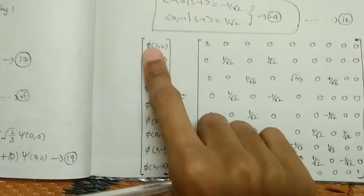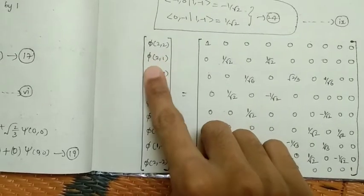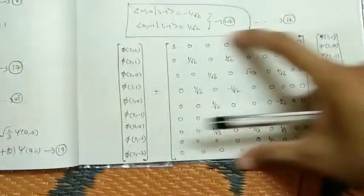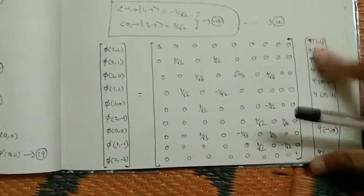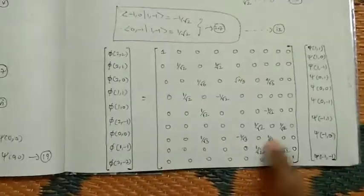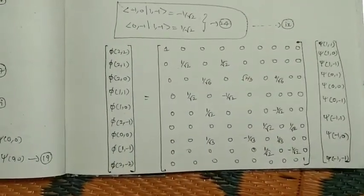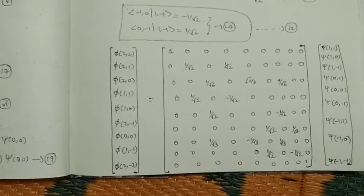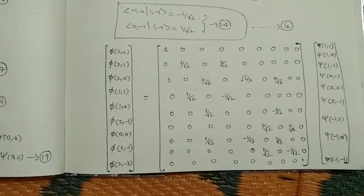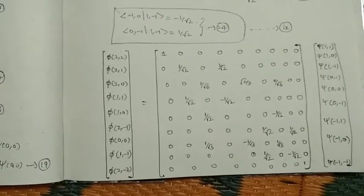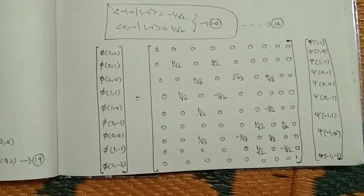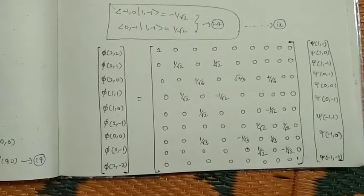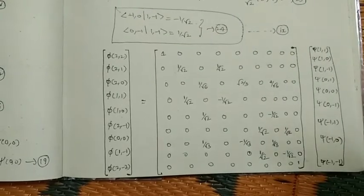These nine sets of Clebsch-Gordan coefficients correspond to different states such as psi(2,2), psi(2,1), psi(2,0), and so on. All of them can be represented in matrix form. This completes the Clebsch-Gordan coefficients for j1=1 and j2=1. Thank you.